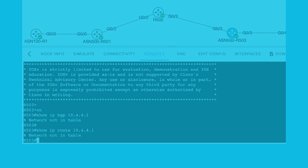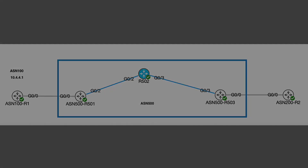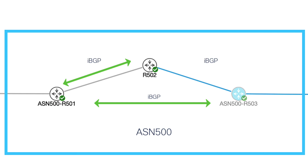There are some options if you need to advertise the route to R503. Option 1: configure confederations — this is not covered in this video. Option 2: configure full mesh. This implies having an IBGP session between each router. In this example, an IBGP session from R501 to R502, from R501 to R503, and from R502 to R503.